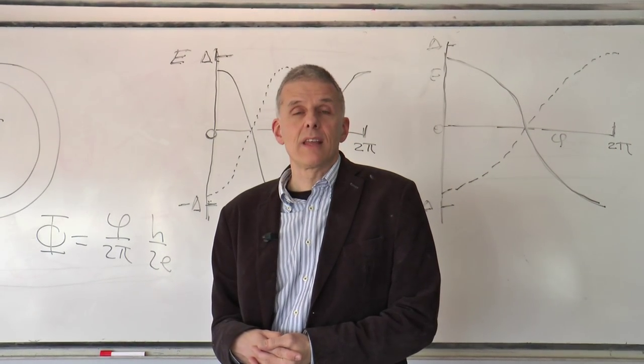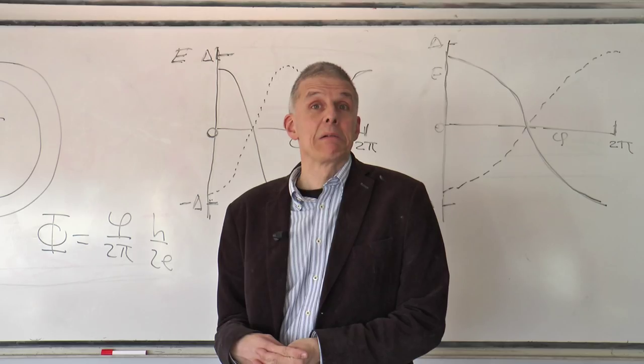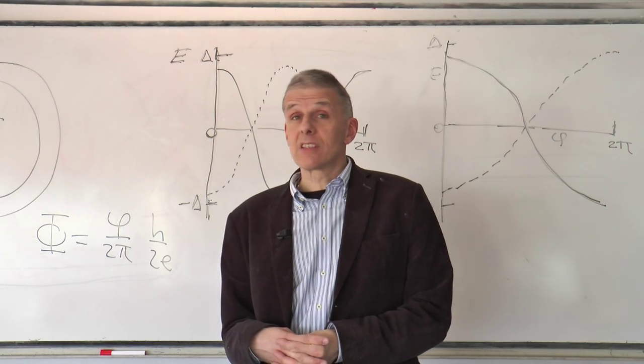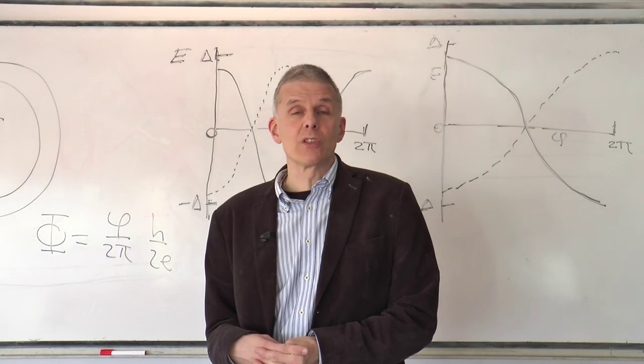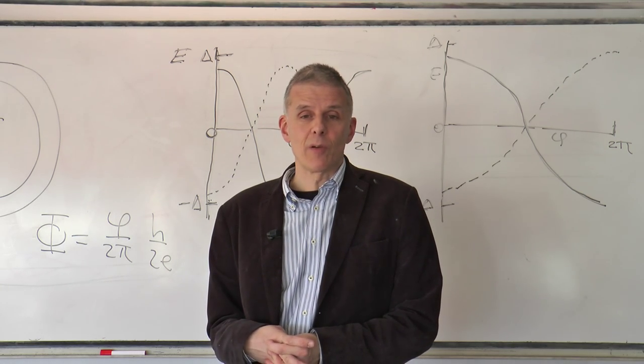Two signature effects of topological superconductivity. The first is this thing which is called the 4pi periodic Josephson effect. And then there is the Majorana zero mode, the resonant conduction of Majorana zero modes.